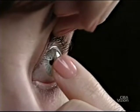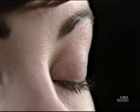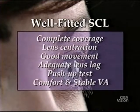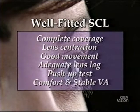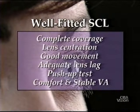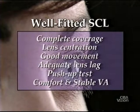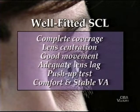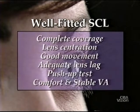In review, the characteristics of a well-fitted soft lens include: the cornea is completely covered by the lens; the lens is centered about the limbus; lens movement up to about 1.5 mm; there is adequate lens lag; the lens moves readily with the push-up test and returns quickly to its original position; the patient reports a good comfort response; and the patient has stable visual acuity with an over-refraction.